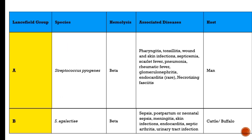The following is the Lancefield grouping with details of species, the type of hemolysis the bacteria produces, the associated disease it causes, and the host associated with each bacterial group.